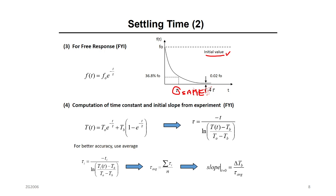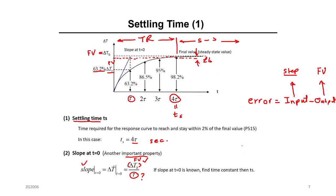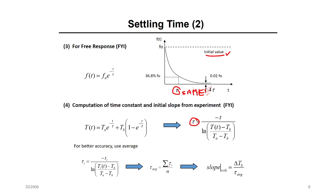Most problems are final value problems — you give a step input to your first-order system and measure the transient response output. For those working in the lab, to measure tau experimentally you run several curves, measure the slope from each, calculate tau, and take the average tau. But here we focus mostly on theory.